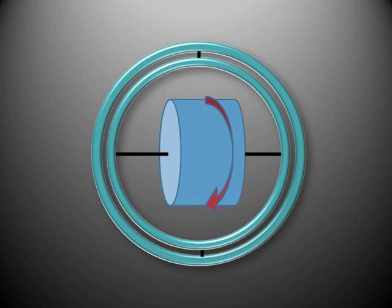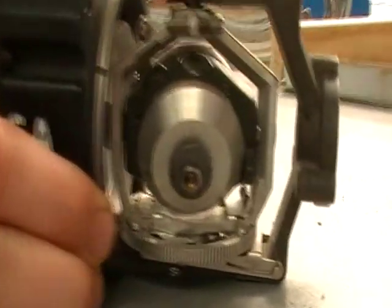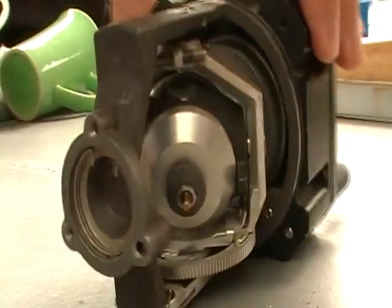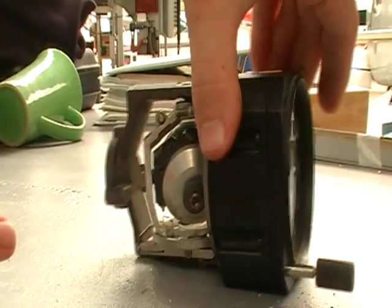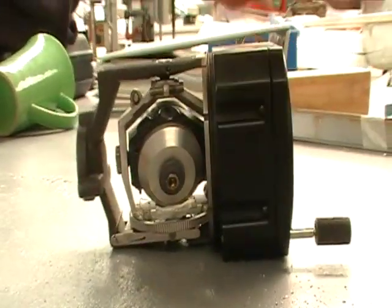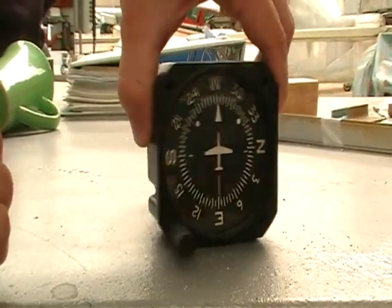We can see this property in the directional gyro. First I cage the gyro by pushing the heading set knob. As you can see, this has aligned the rotor with the horizontal plane of the aircraft. As I rotate the instrument, the rotor is remaining aligned in space, rotating the outer gimbal that turns the compass card via a gear.